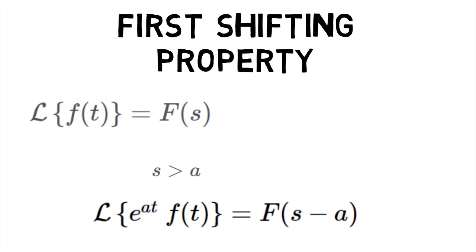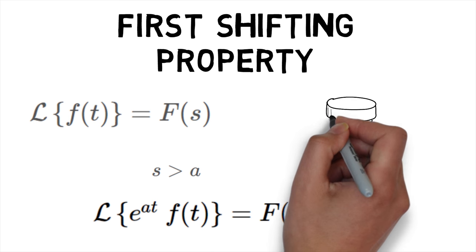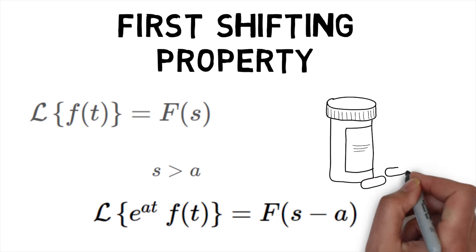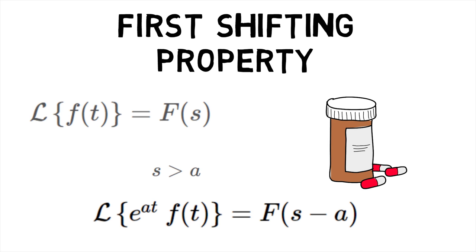the first shifting property states that the Laplace transform of e^(at) f(t) is equal to F(s-a). In other words, the substitution of s-a for s in the transform corresponds to the multiplication of the original function by e^(at).